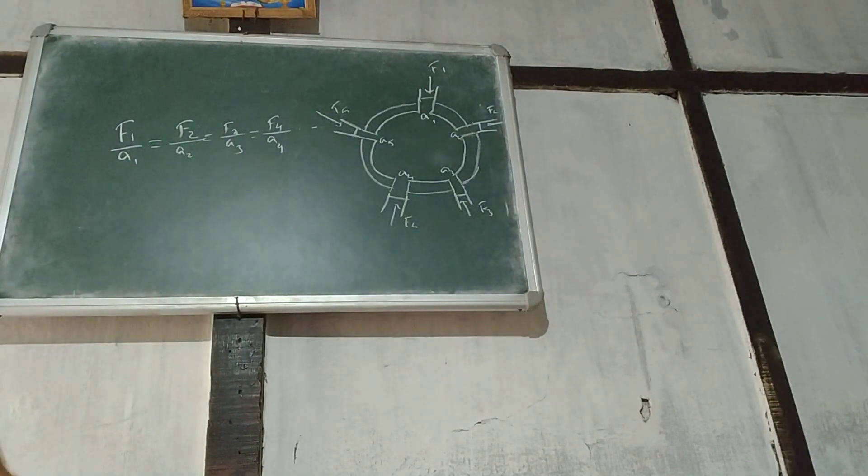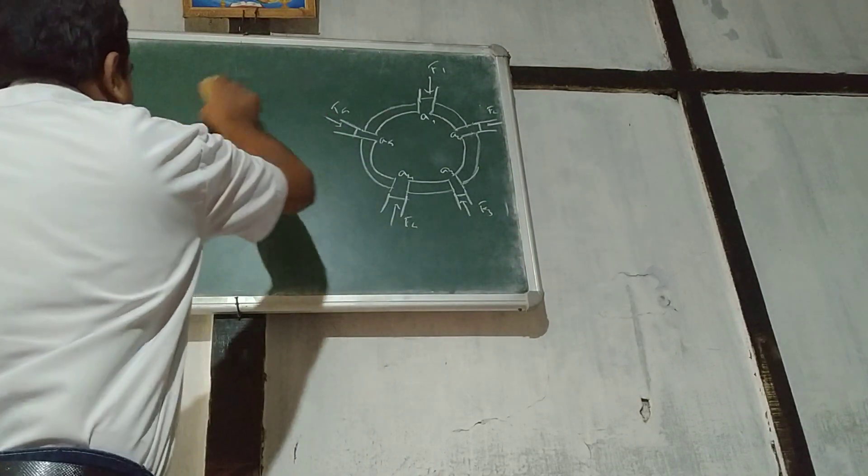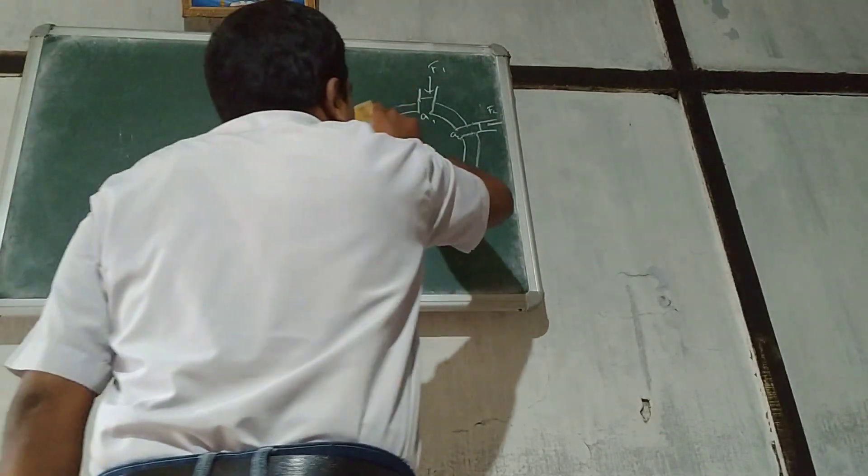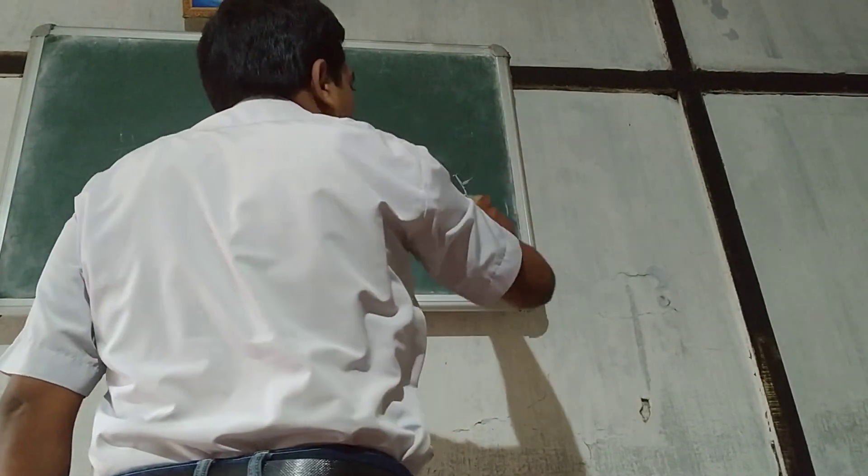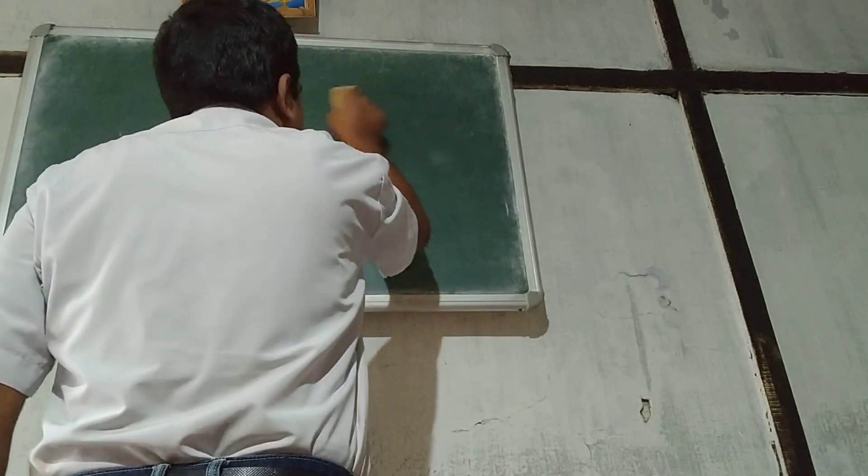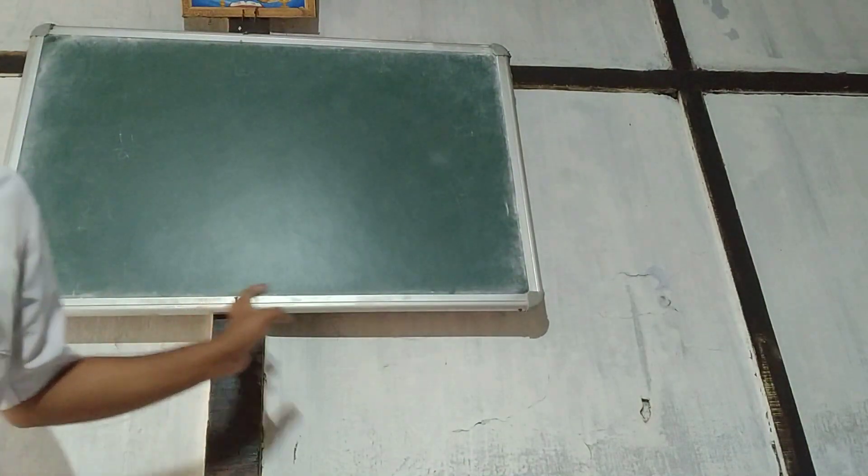Variation of pressure with depth. We have just learned pressure P equals H rho g. This is the continuation of this part.